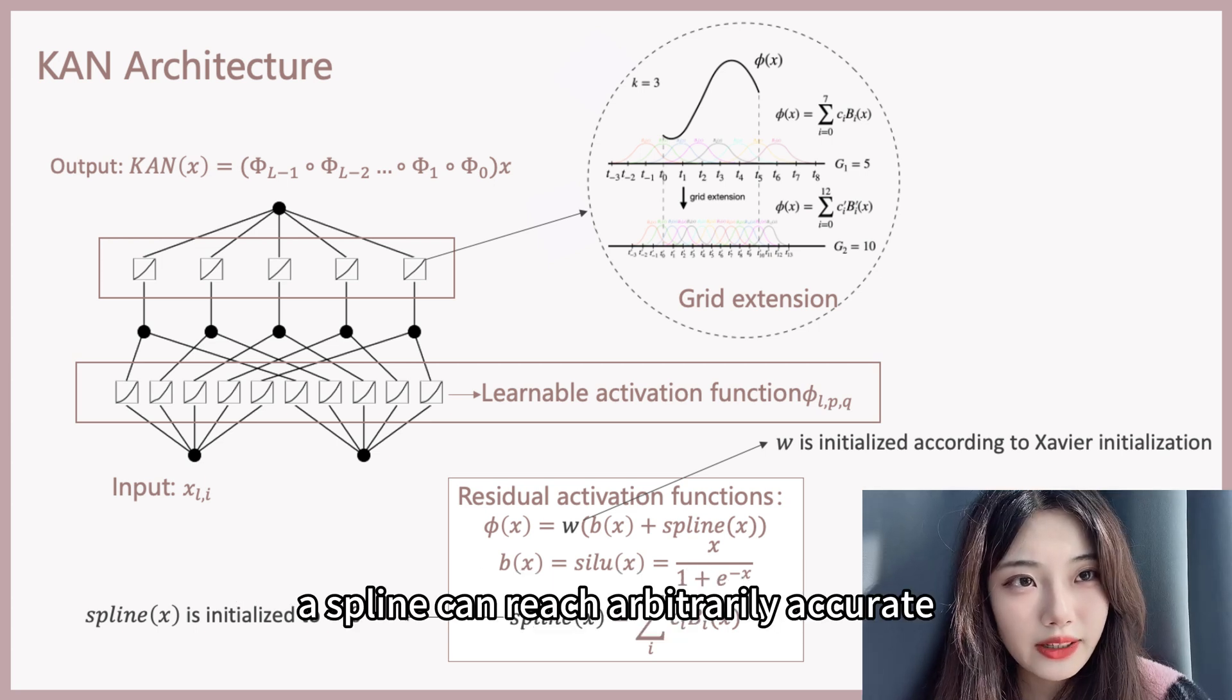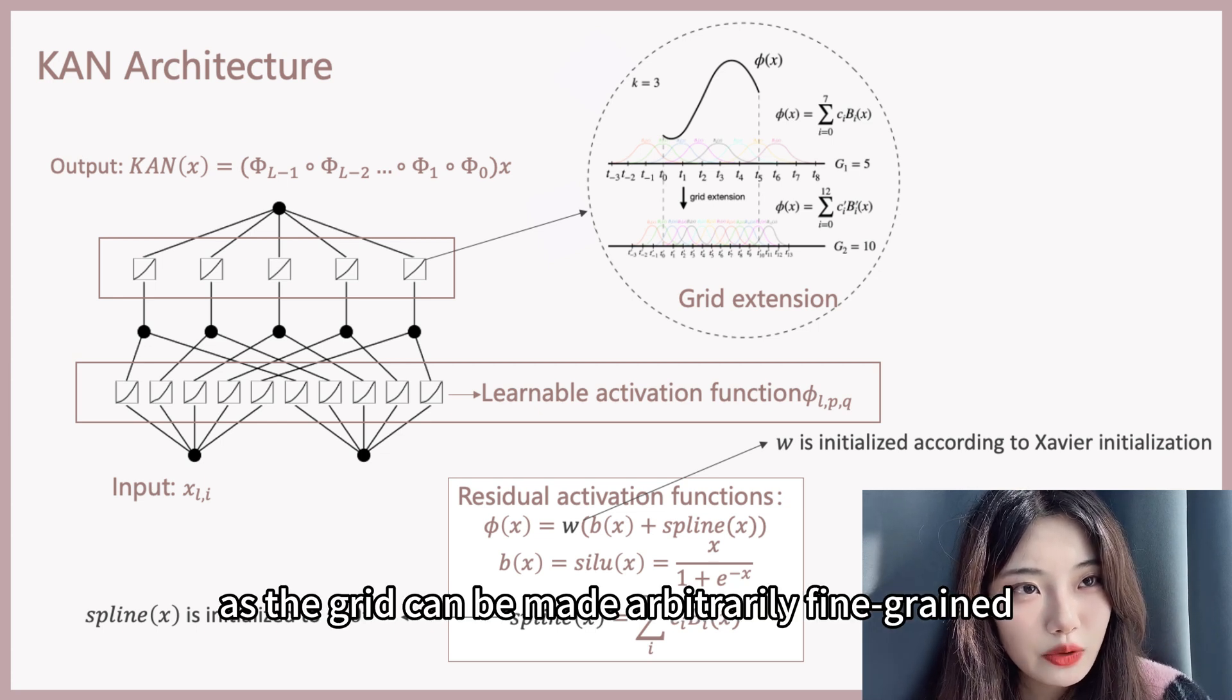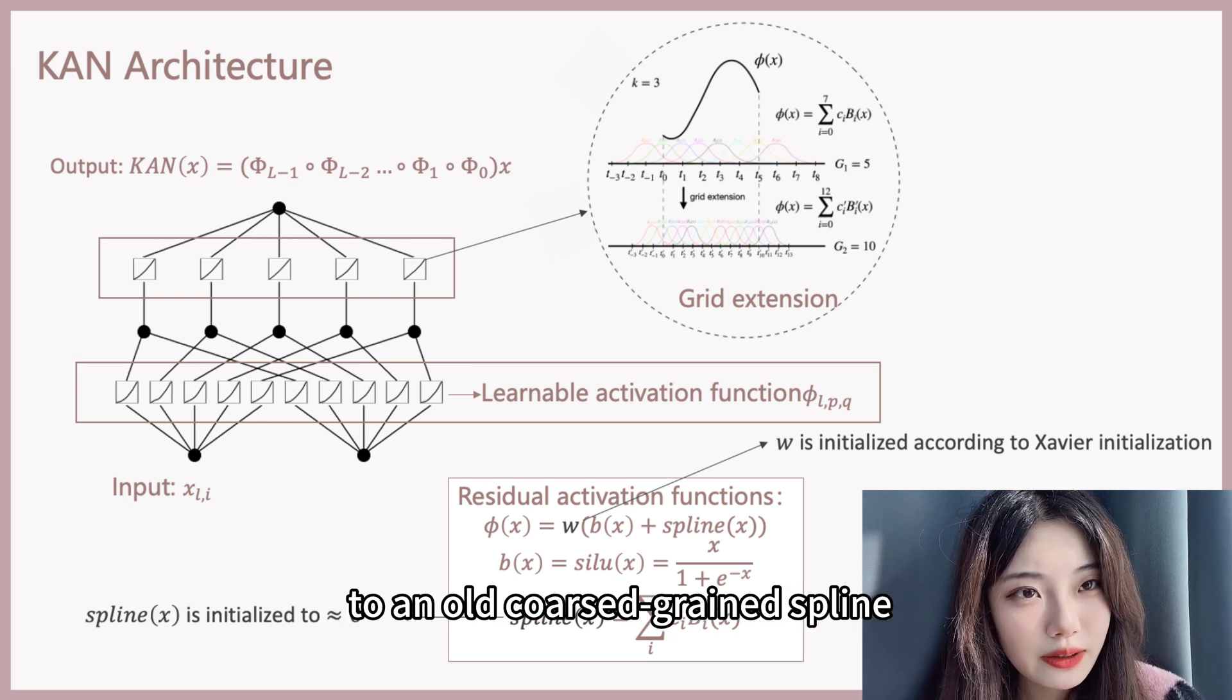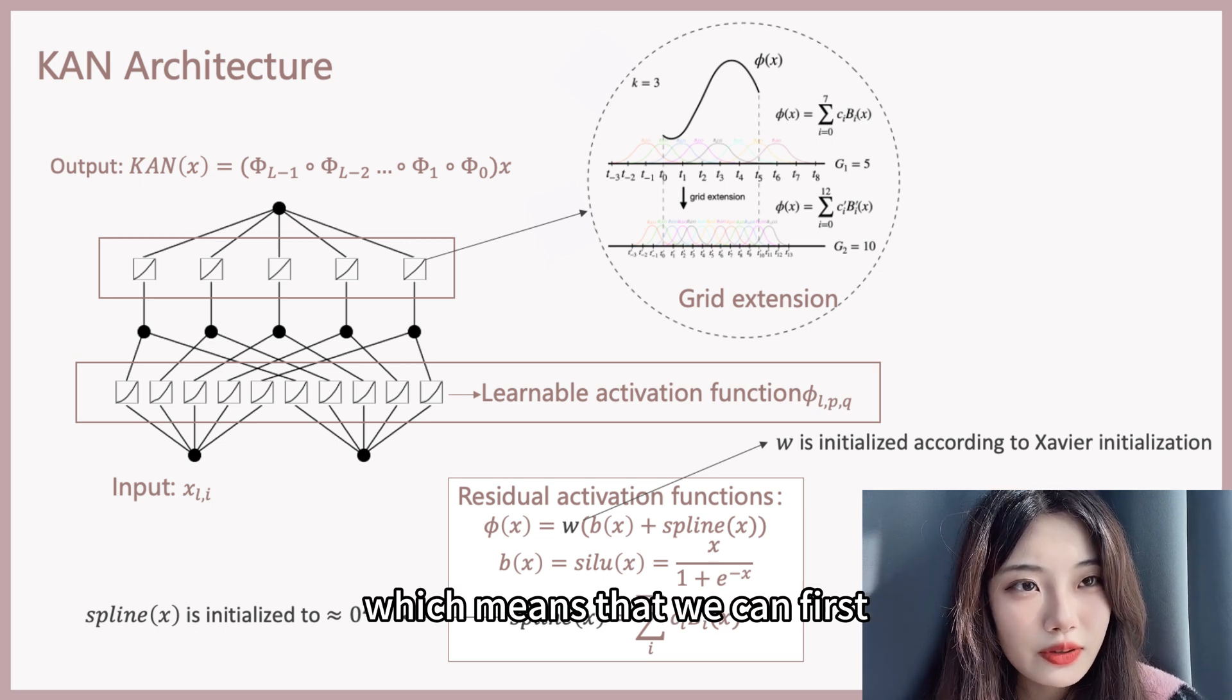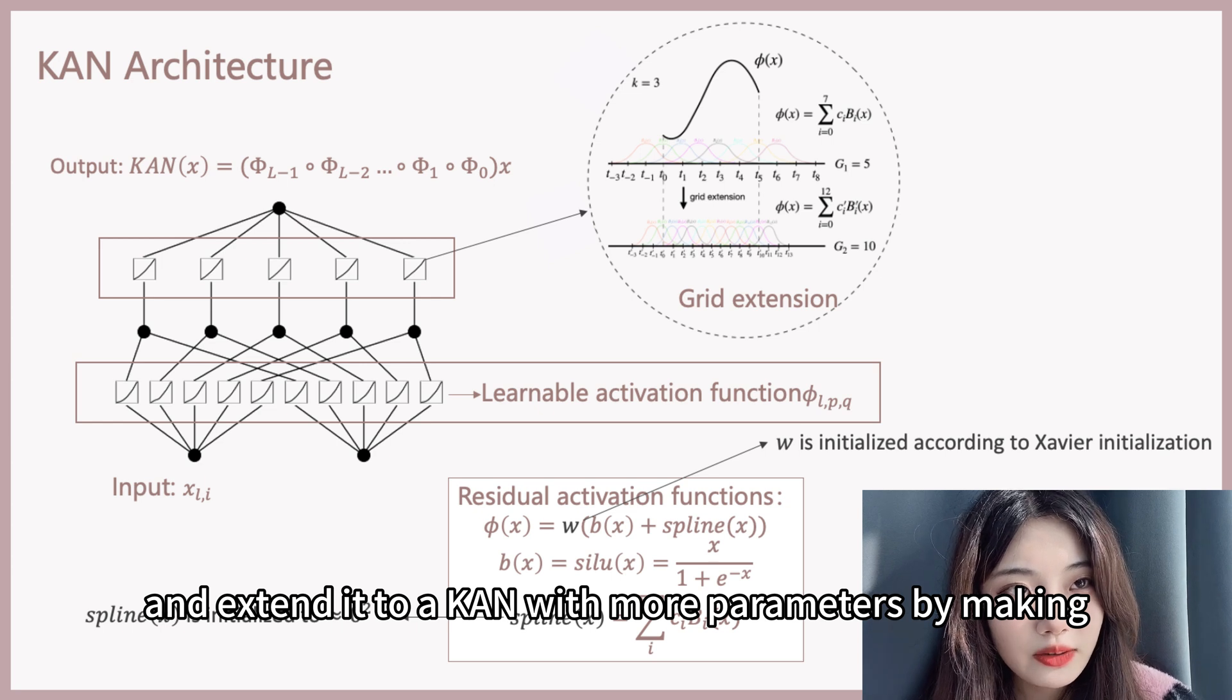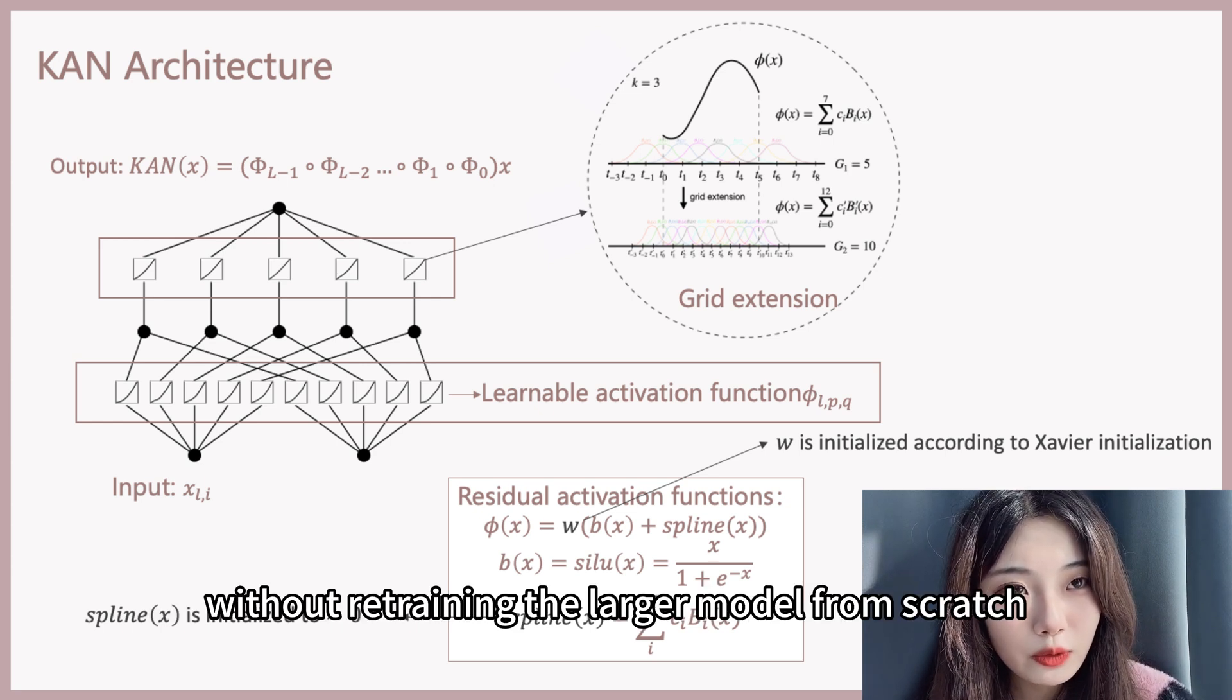A spline can reach arbitrarily accurate to the target function, as the grid can be made arbitrarily fine-grained. So KAN uses grid extension to fit a new fine-grained spline to an old coarse-grained spline. Which means that we can first train a KAN with fewer parameters and extend it to a KAN with more parameters by making its spline grids finer without retraining the larger model from scratch.